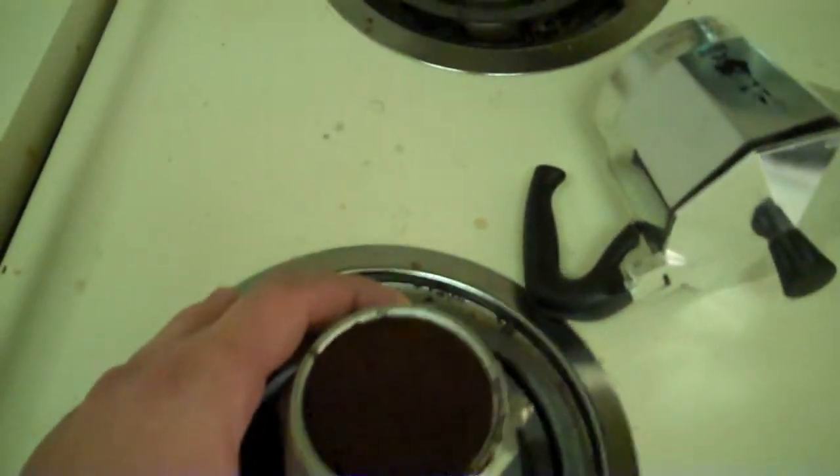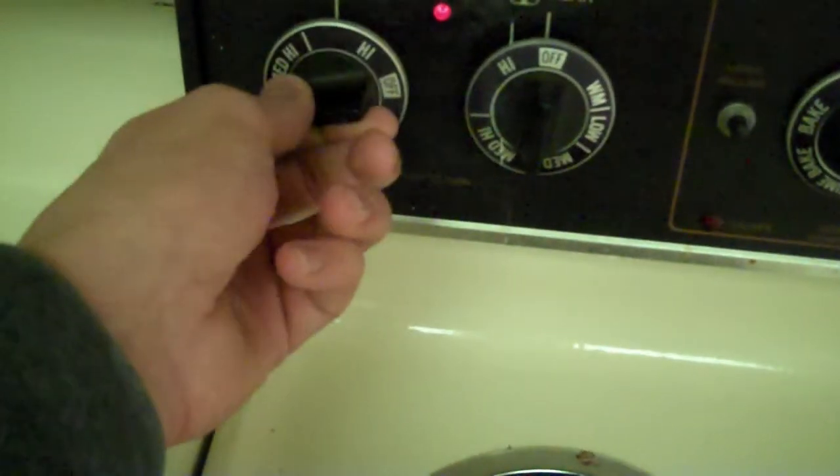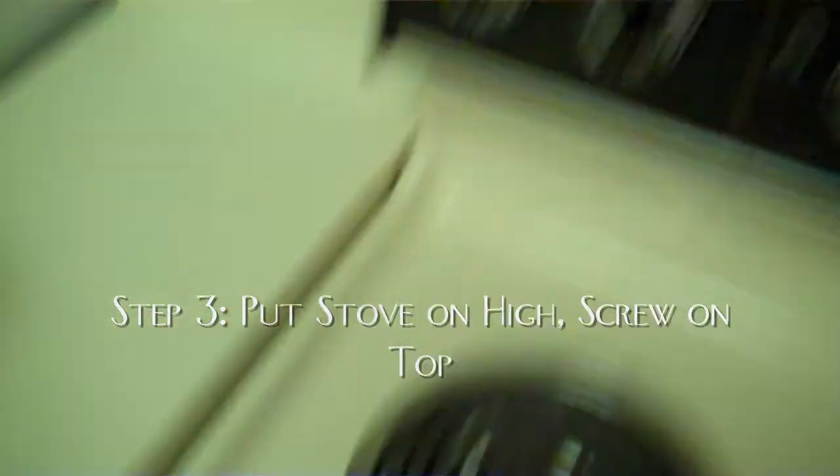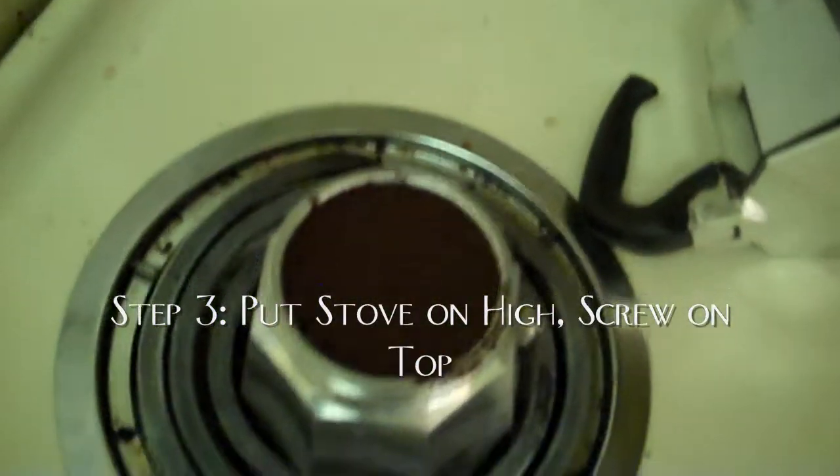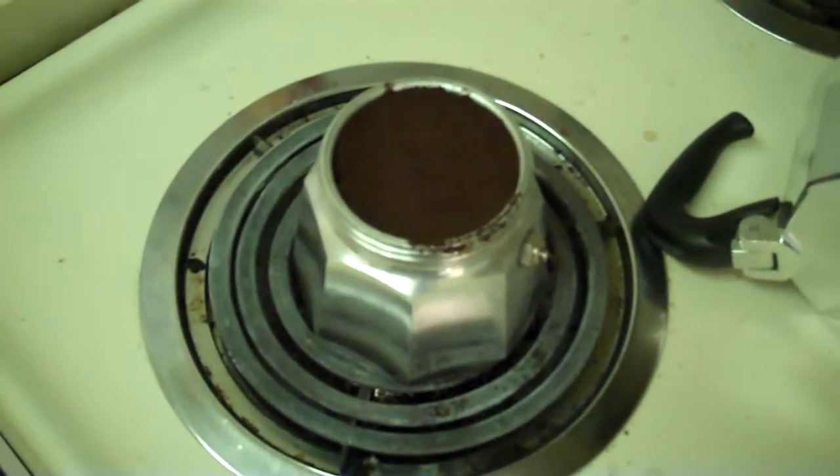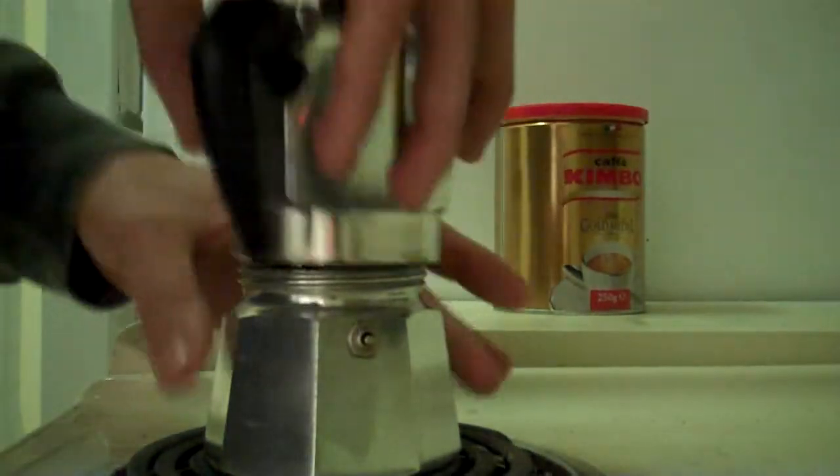Alright guys, we got our coffee in the maker. At this point I'm going to turn on the stove. You want to put it on high, there's no reason not to. You want the coffee to come up as fast as possible. You don't want to slowly have it come up, you want to make it hot. So put it on high. You're going to screw on the top like so.